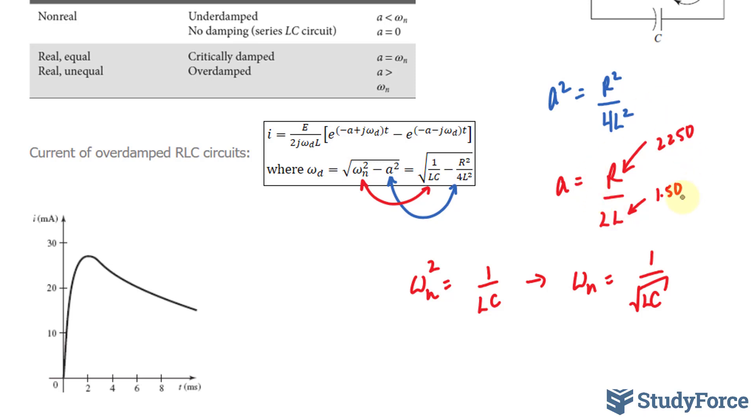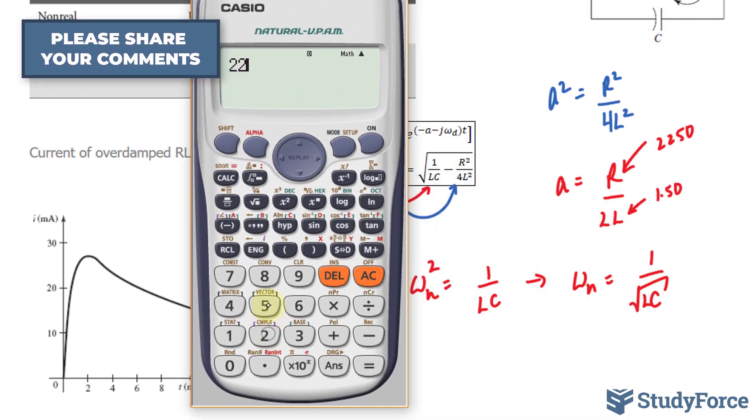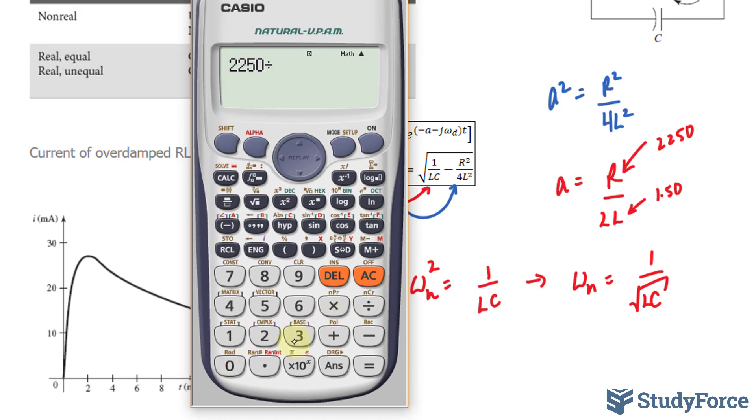We'll start with A. I'll use my calculator. I have 2250 divided by 3, because 2 times 1.50 is 3. That gives me 750.